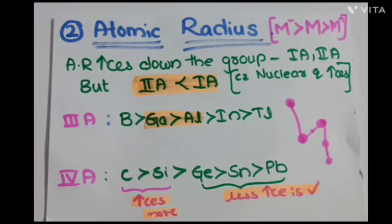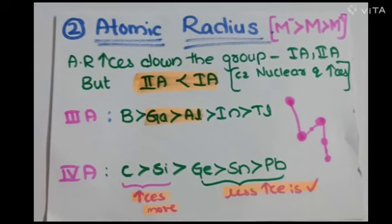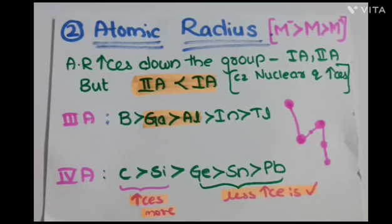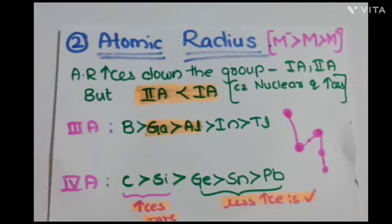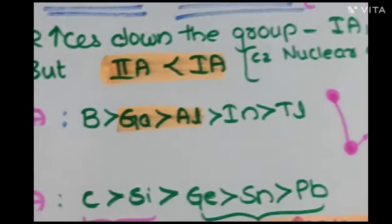Atomic radius: the pink color marks will give you the atomic radius increase in order. Generally, atomic radius increases down the group, and here it is also same with IA and IIA groups. But the increase in atomic radius of IA group is very much greater than the IIA group. This is because of the increase in nuclear charge.